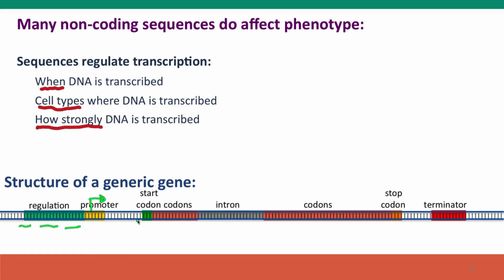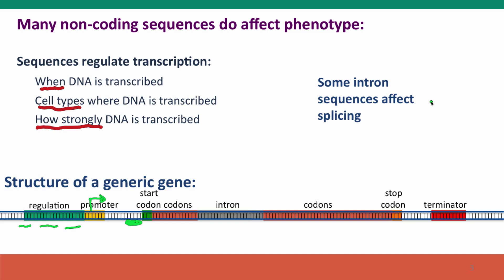Sequences in the DNA can also affect things that happen to the RNA. For instance, the ribosome binding site in the messenger RNA affects how strongly and efficiently the RNA is translated. Intron sequences also affect splicing. Almost all sequences in introns are effectively junk with no contribution to phenotype, but introns do contain some critically important sequences because the sequences at the ends of introns provide signals to the splicing machinery telling it what sequences should be cut out. We'll see an example of these mutations when we talk about cystic fibrosis in Module 3.